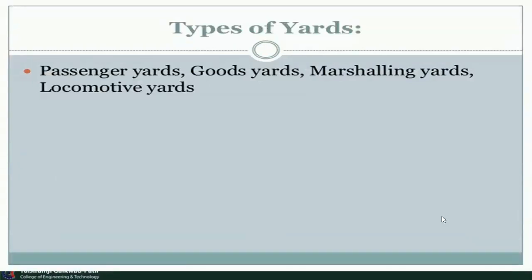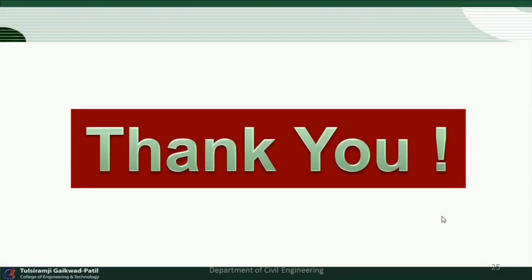What are the types of yards? Yards are divided into a number of types: the first is called the passenger yard, the second is the goods yard, the third is the marshalling yard, and the next is the locomotive yard. These yards are classified as per the uses of the particular yard and the various types of facilities provided. Today we discussed the basic terminology of station and yards. In the next class, we will discuss in detail about passenger yard, marshalling yard, locomotive yard, and so on. Thank you.